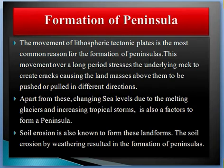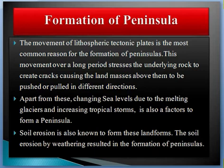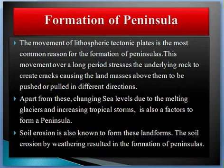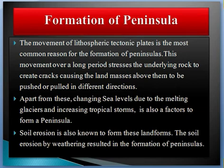Formation of a peninsula: the movement of lithospheric tectonic plates is the most common reason for the formation of peninsulas. This movement over a long period stresses the underlying rock, creating cracks and causing land masses to be pushed or pulled in different directions. Changing sea levels due to melting glaciers and increasing tropical storms also contribute, and soil erosion by weathering can also result in the formation of a peninsula.